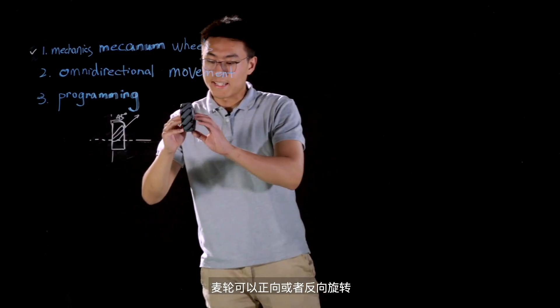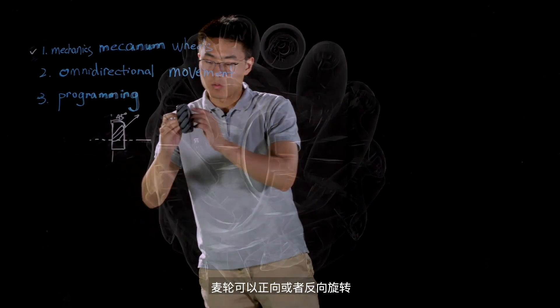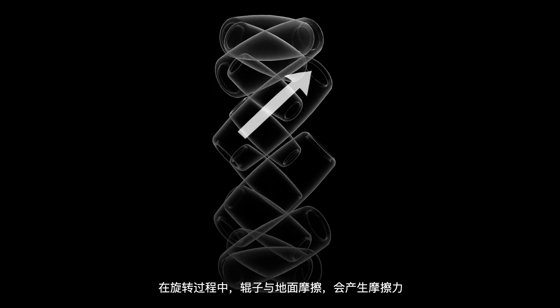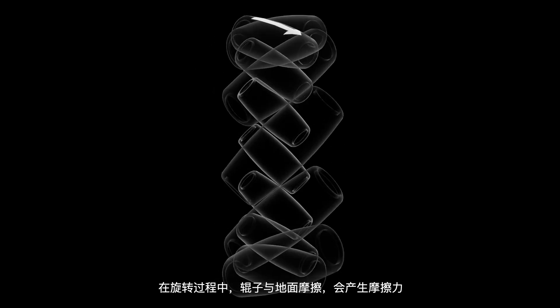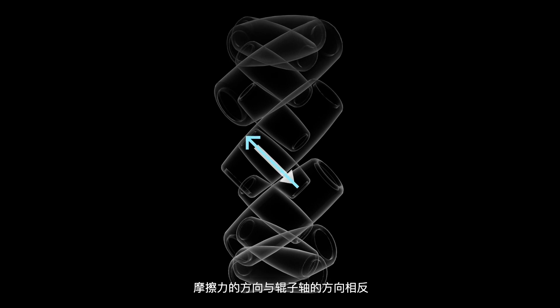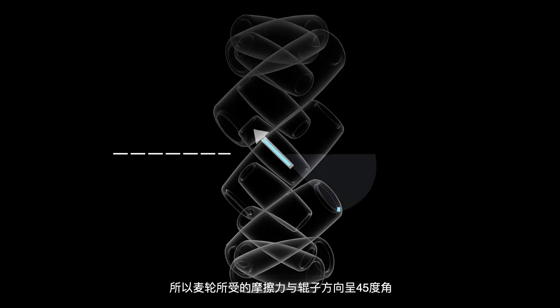The Mecanum wheel can rotate either forward or backward. During the rotation, the contact between the rollers and the ground surface can cause friction force, which is opposite to the direction of axis of rollers. So, the friction force acting on the wheel is in the direction of 45 degrees along the roller.